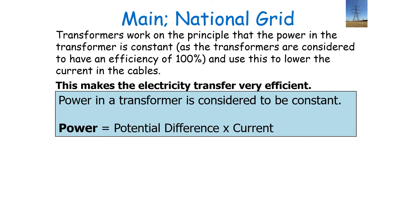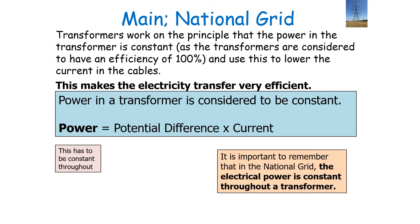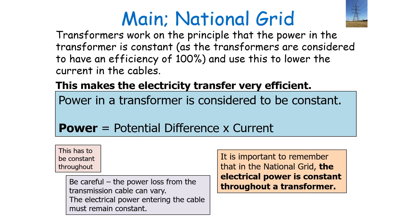Consider our equation to work out the power in our transformer: power equals potential difference times current. It is important to remember that in the national grid the electrical power is constant throughout a transformer. Just be very careful — the power loss from the transmission cable can vary, but the electrical power entering that cable from the transformer must remain constant.